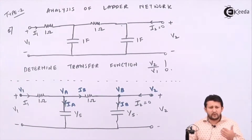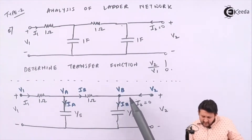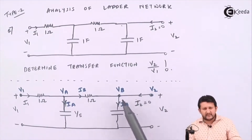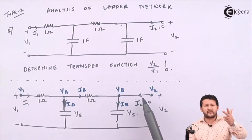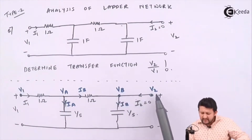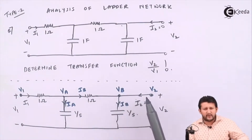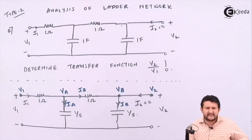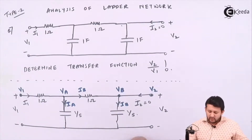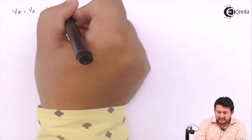Let's understand further how to solve this. I don't have any potential difference between these four points — that means no resistance, no inductor, no capacitor. When there is nothing in between, the potential differences are the same. So if there is no potential difference, I can say V2 and Vb are the same. Therefore, Vb will be equal to V2. That's the first key result.